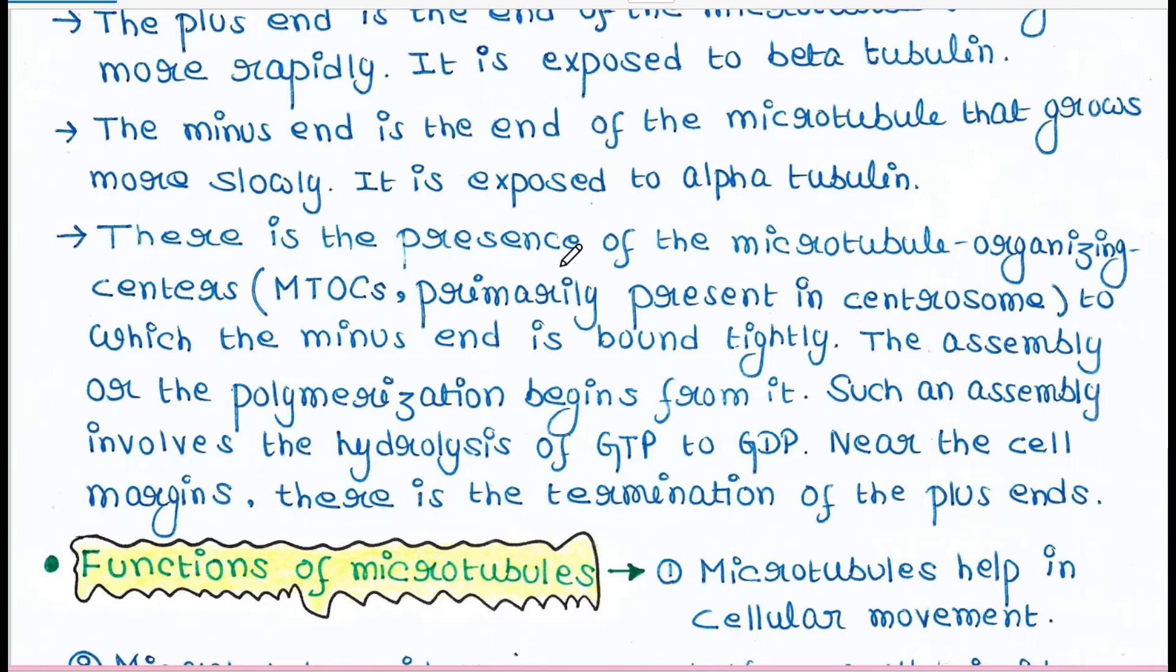There is the presence of the MTOCs. MTOCs are actually microtubule organizing centers. They are primarily present in the centrosome. So these MTOCs bind the minus end tightly. The assembly or the polymerization begins from these MTOCs. Such an assembly involves the hydrolysis of GTP to GDP. So polymerization requires GTP hydrolysis.